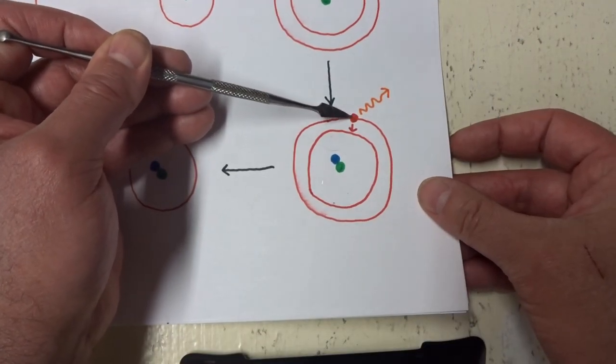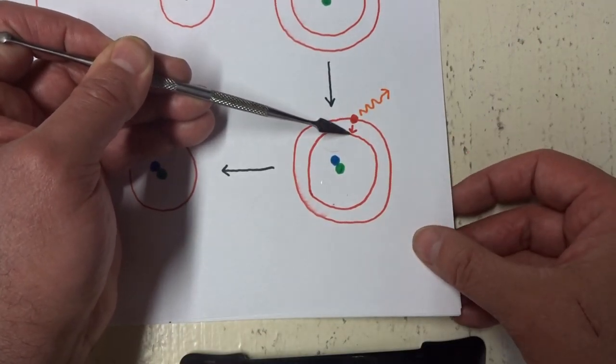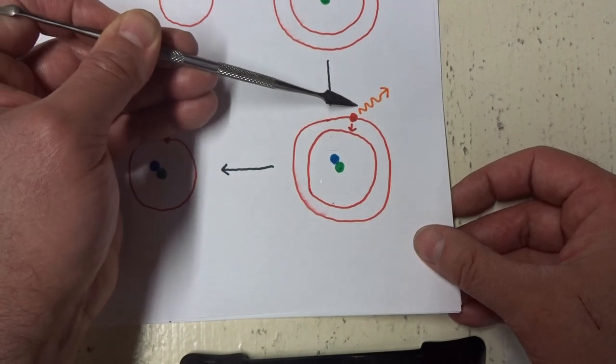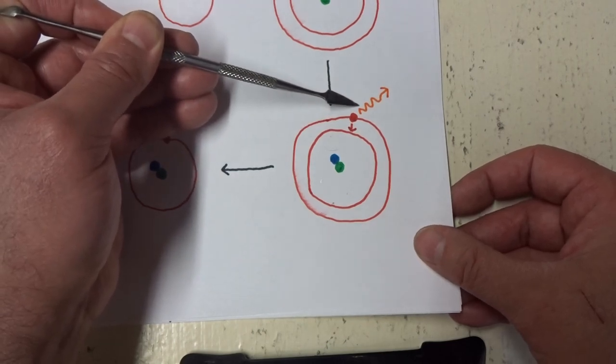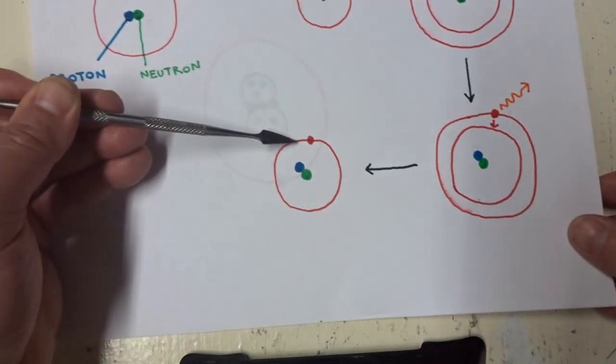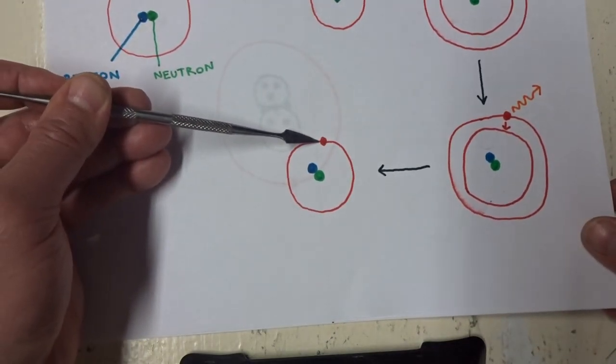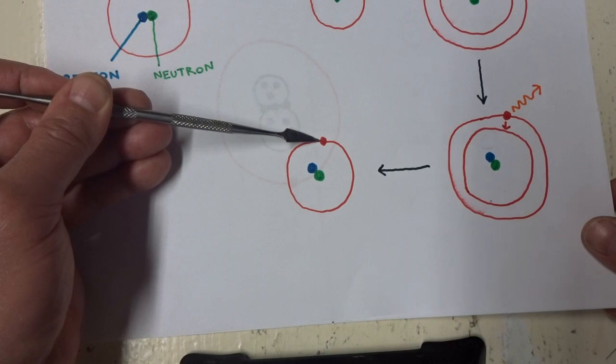it then reverses back to its original state, its more stable state, giving off electromagnetic energy. And then here's the model of the atom, with the electron and its ground state.